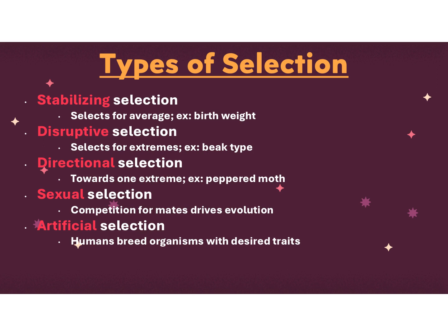You can also have sexual selection, where competition for mates, more so than the environment, drives what's best. We talked about the peacock — its tail is more for finding mates than survival. Artificial selection is what humans have done; examples include dog breeds, horses, and some crops, where humans are selecting the best traits. With artificial selection, it's not necessarily what's best for the animal — it's what humans have decided is best.